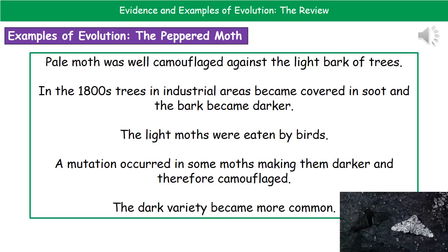Looking at examples where we can see evolution having taken place, the first is the peppered moth. The pale moth was very well camouflaged against the light bark of trees. However, when the Industrial Revolution kicked in during the 1800s, trees in industrial areas became very soot-covered and the bark became much darker. As a result, the pale moth stood out while the darker moth blended in perfectly and was well camouflaged. So the light moth was eaten by birds much more, meaning the dark moths survived, reproduced, and the dark variety became more common.